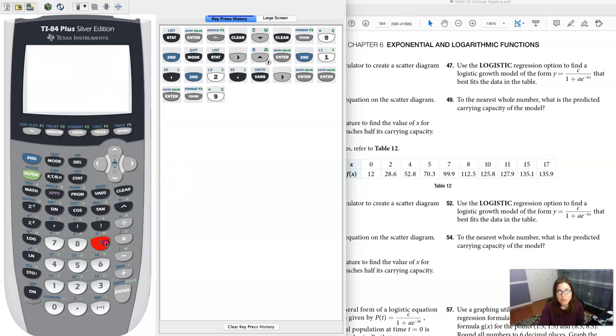But ultimately, let me just hit zoom 9, and there we go. So I've graphed that logistic model on my scatter plot, and that's what we would do for number 53. All right.